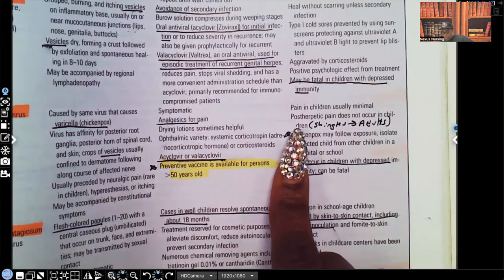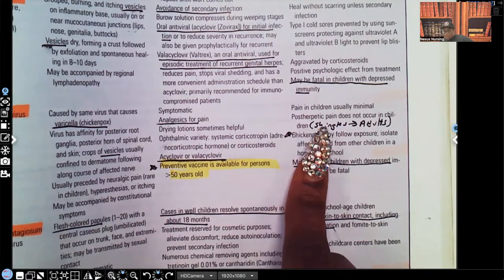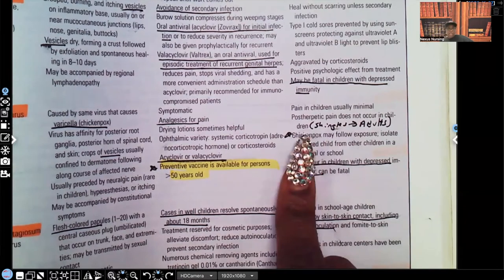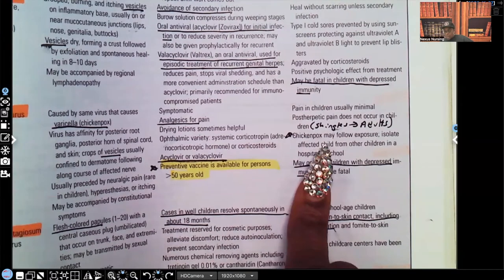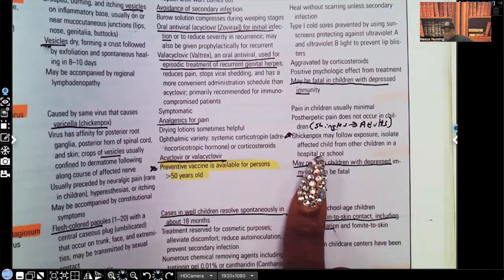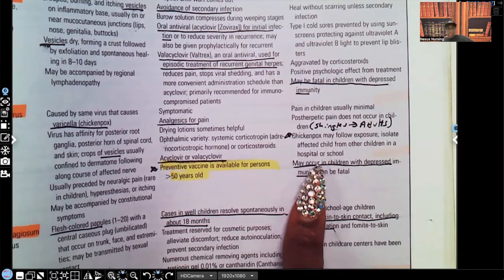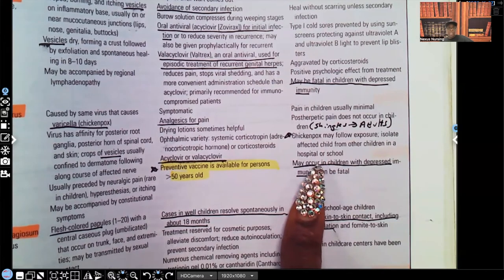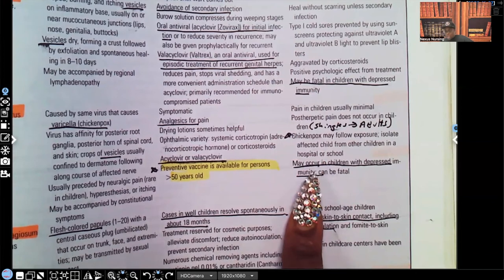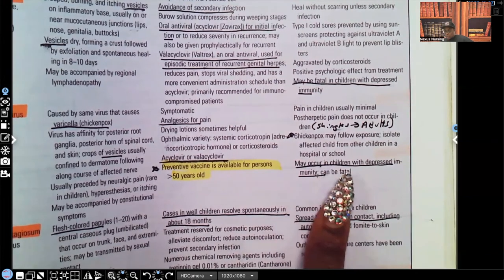Let's keep going. For the varicella, post-herpetic pain does not occur in children. It occurs in adults and that's why I wrote here shingles. Chicken pox may follow exposure, isolate the affected child from other children in the hospital or school because this is very contagious. It's going to be contagious until those lesions have crusted over and may occur in children with depressed immunity.